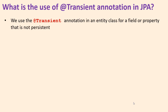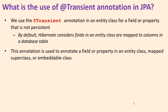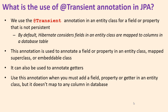What is the use of the transient annotation in Hibernate JPA? Basically, we use the transient annotation in an entity class for a field or property that is not persistent, because by default Hibernate considers fields in an entity class are mapped to columns in the database table. This annotation is used to annotate a field or property in an entity class, mapped superclass, or embeddable class. It can also be used to annotate getters. Use this annotation when you must add a field, property, or data in an entity class but it doesn't map to any column in the database.